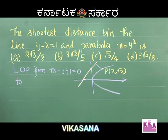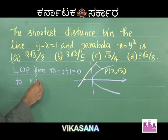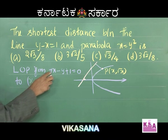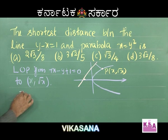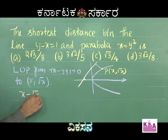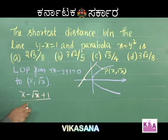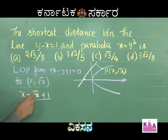Distance from point (x, √x) to the line x − y + 1 = 0 is |x − √x + 1| / √(1² + 1²) = |x − √x + 1| / √2.